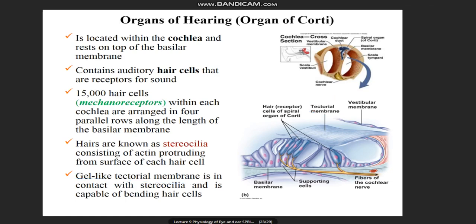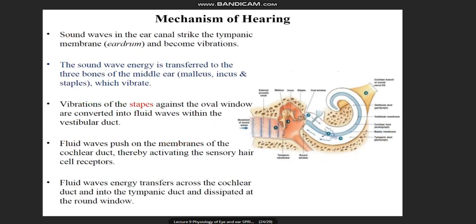The tectorial membrane is a fixed gel membrane — it does not move. The basilar membrane moves up and down. On the basilar membrane sits the organ of Corti with its hair cells. The organ of Corti is the general term; it is composed of outer and inner rows of hair cells. Both rows have nerve supply. The organ of Corti is the receptor for hearing.